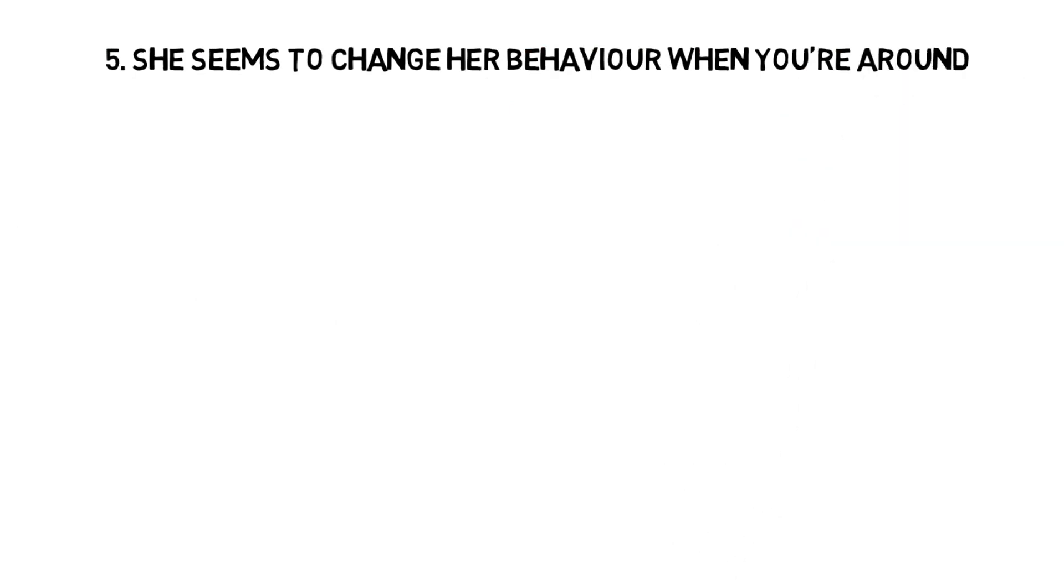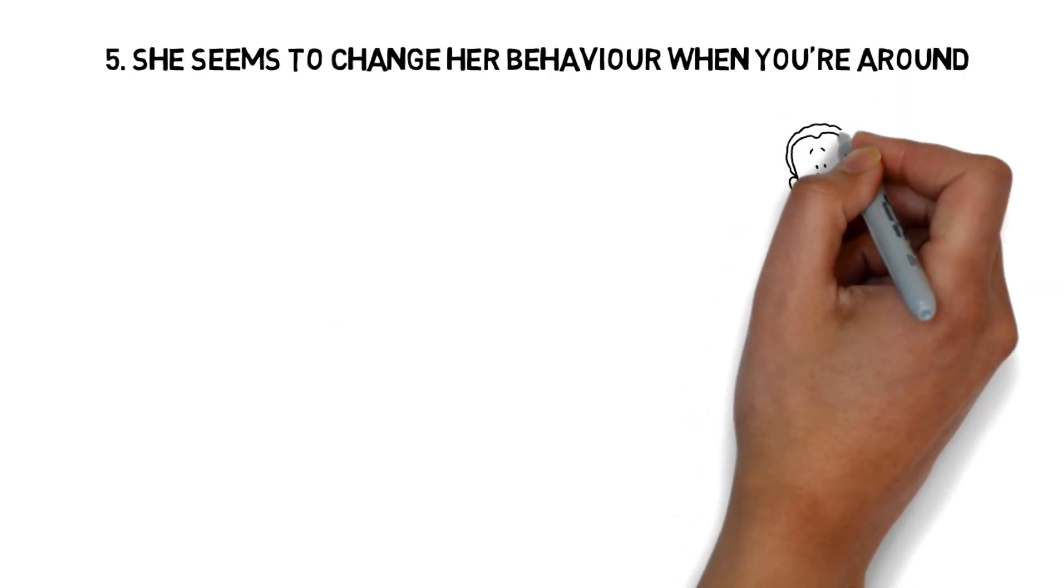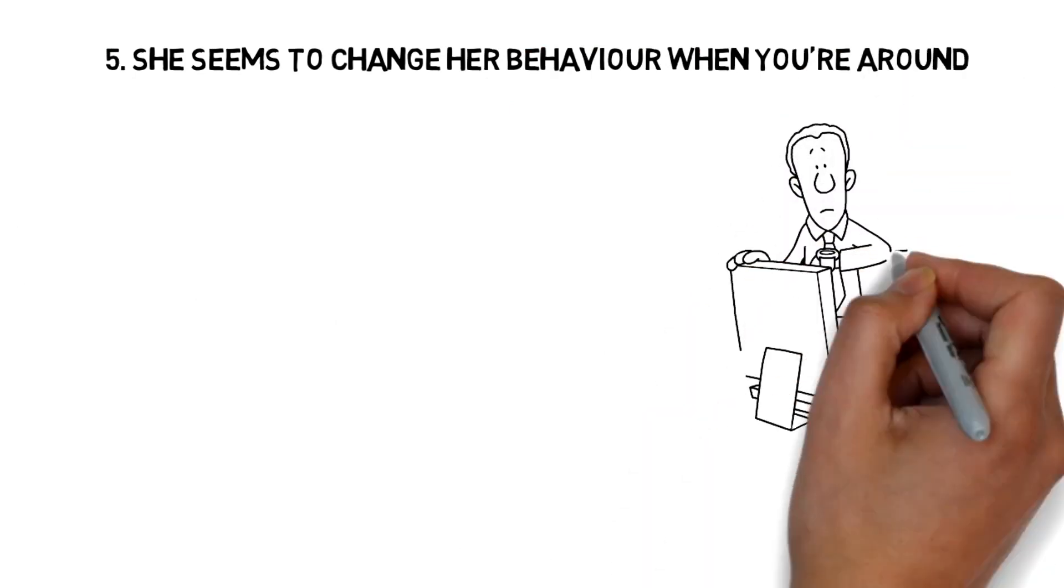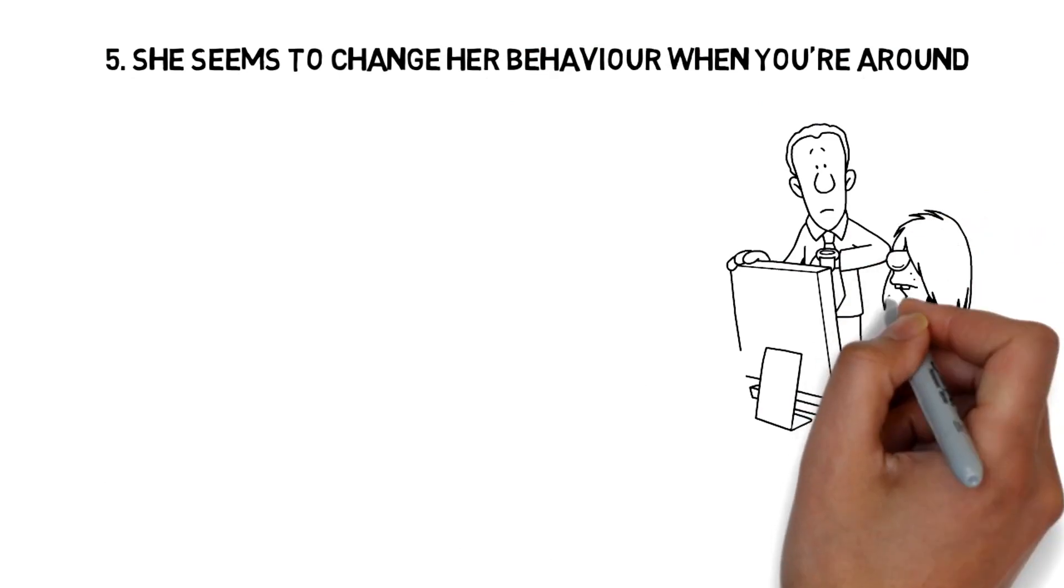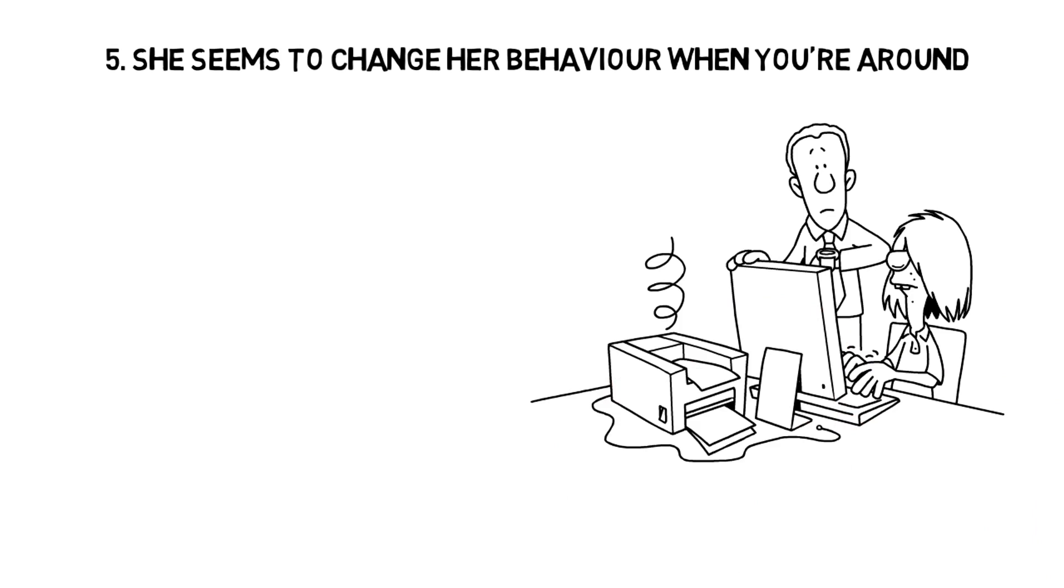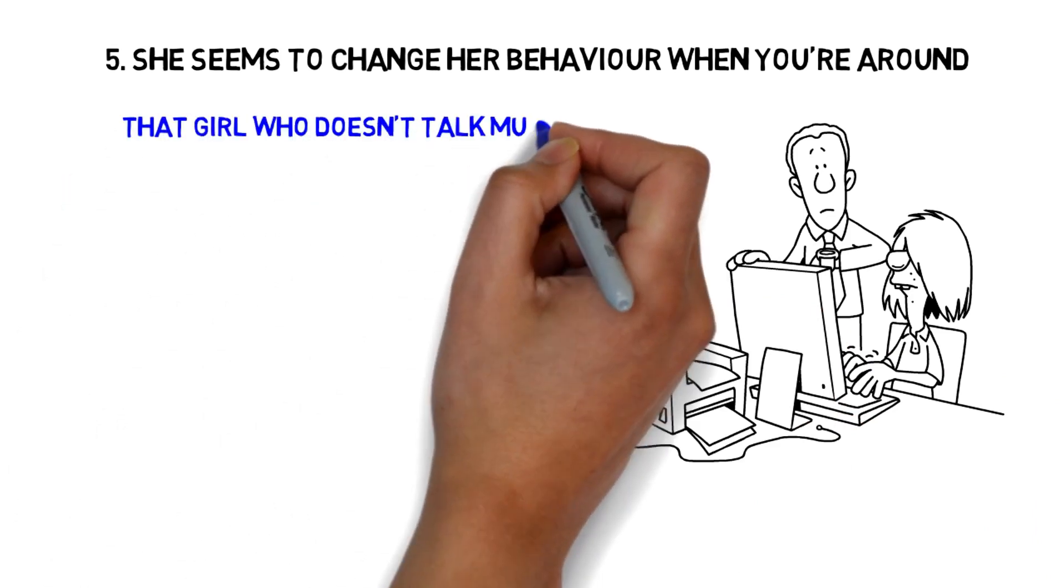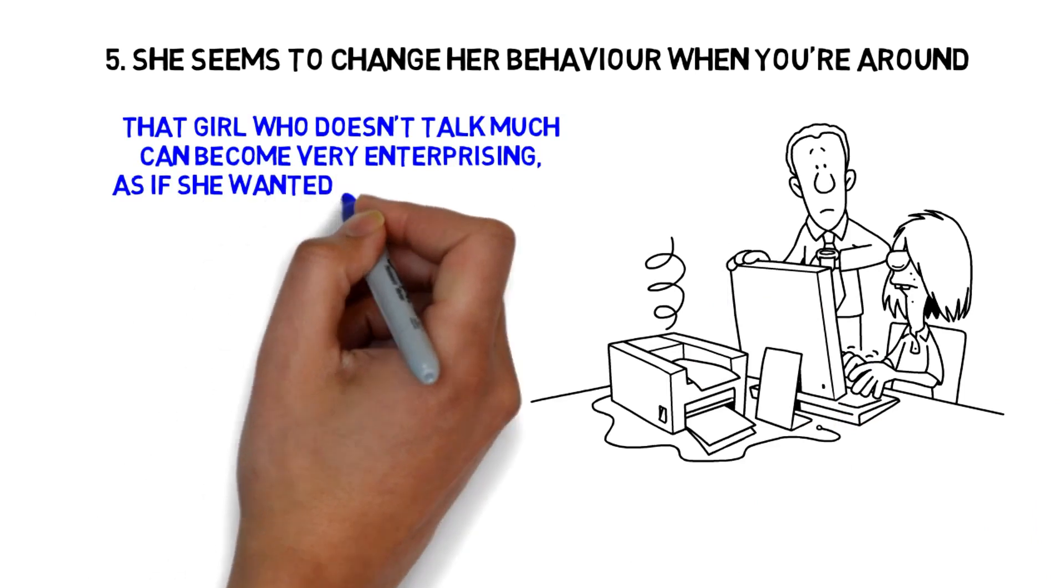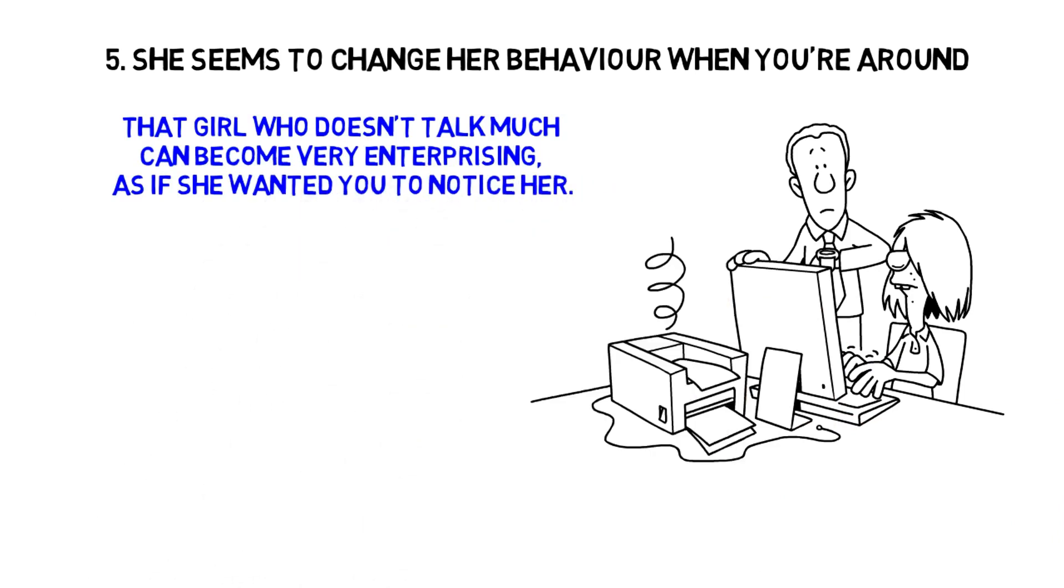5. She seems to change her behavior when you're around. You may have noticed that when you are around, her behavior changes. Among her group of friends, she, who seemed so talkative, tends to become shy when you're around. On the contrary, that girl who doesn't talk much can become very enterprising, as if she wants you to notice her.